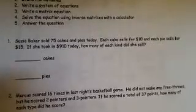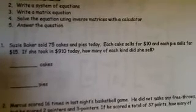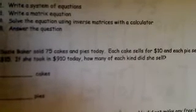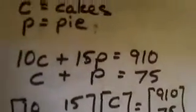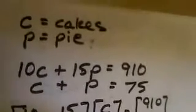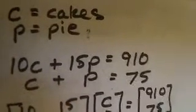The first problem involves cakes and pies. Susie Baker sold 75 cakes and pies today. Each cake sells for $10 and each pie sells for $15. If she took in $910 today, how many of each did she sell? We want to define our variables first, and we're going to call c cakes and p pies. We could have used x and y, and we will for the next two problems, but I wanted to try some easy variables first.